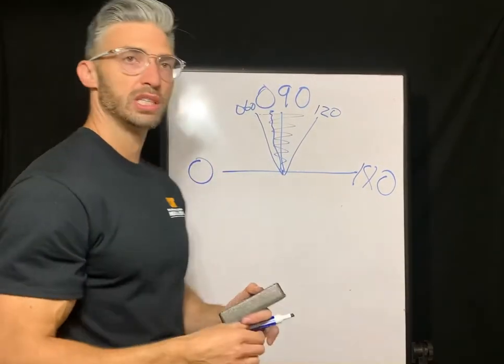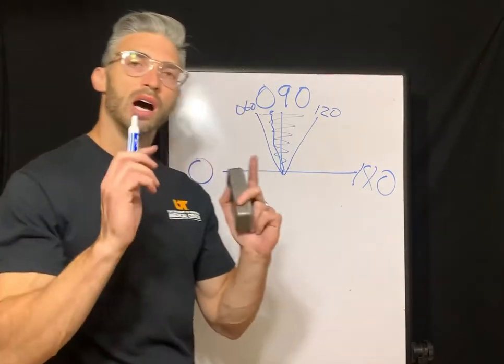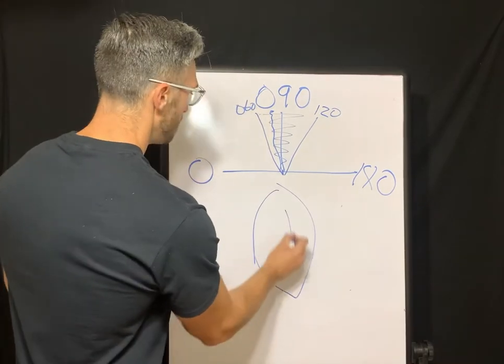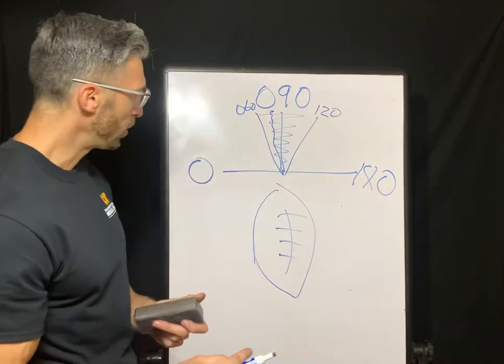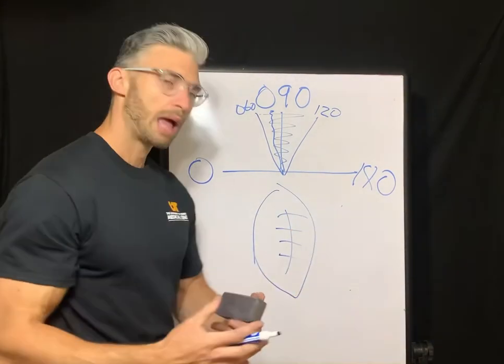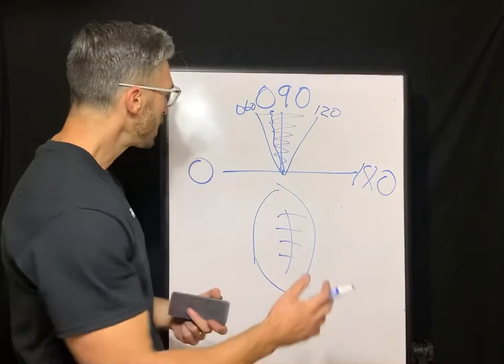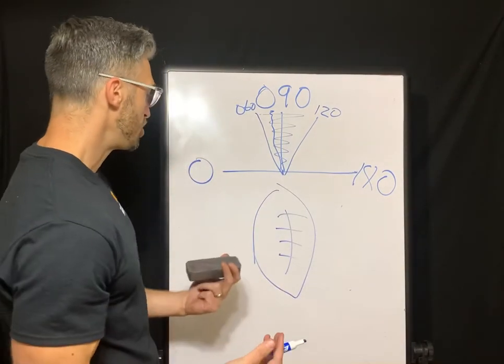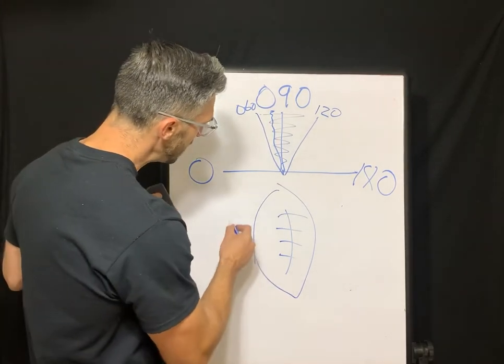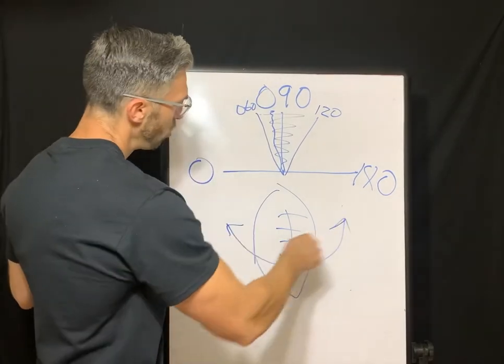And remember, if this number was anywhere in this zone, you would classify it as with the rule astigmatism. See? Not so bad. So now, let's just change things up, and we're going to do against the rule astigmatism. Against the rule astigmatism, think of it as a football standing up. That is an ugly football. But you get the point.